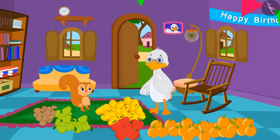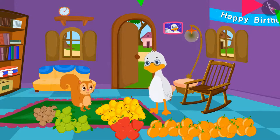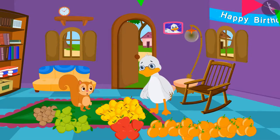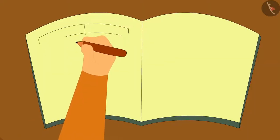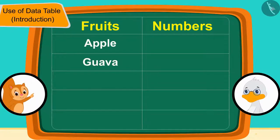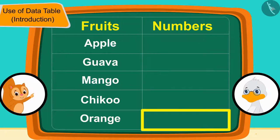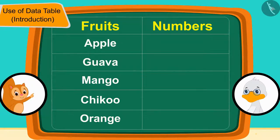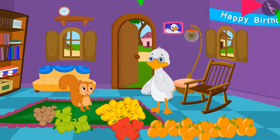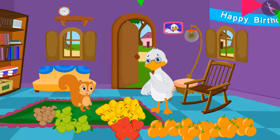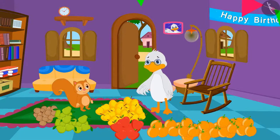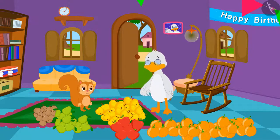Chanda told uncle, "Don't be sad uncle. I have another solution for this too." Chanda quickly made a table on a paper. "Uncle, we can use this table to write down the number of fruits so that we don't forget them when we finish counting. Here I have written the names of all the fruits. As we finish counting the fruits, we will write the total number in front of the name of that fruit in this table. In this way, when we finish counting all the fruits, the numbers of all those fruits would have also been recorded."